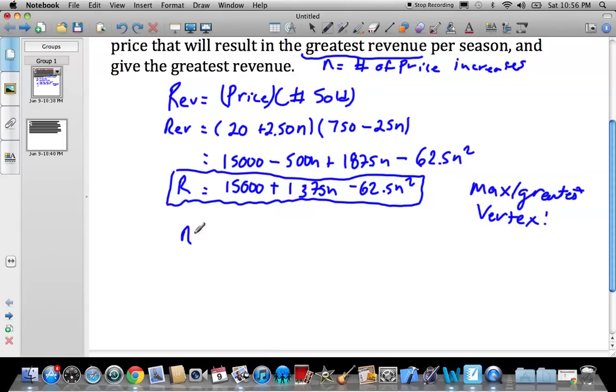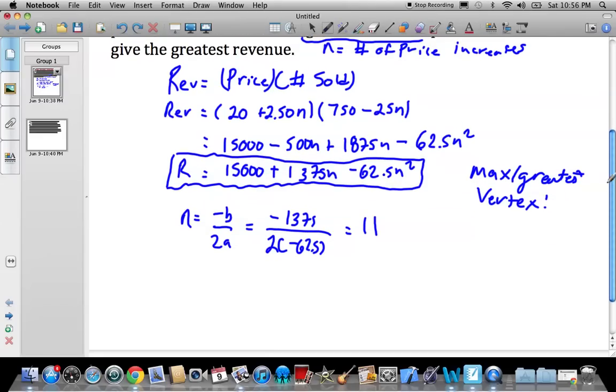So n is equal to negative b over 2a. So n is going to be, let's see, negative 1,375 divided by 2. Recognize that even though this is reversed order, this is still a, negative 62.5. So hopefully this gives us a good number. And it does, it gives us 11. It's a fairly large number, actually. So n equals 11.